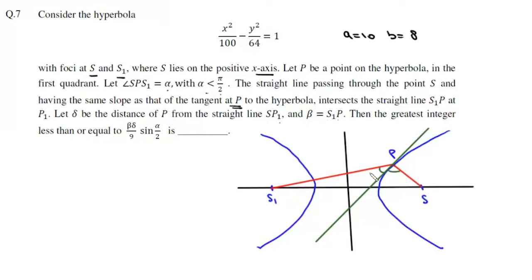Now it says angle sp s1 equals alpha, so this angle is alpha by 2 and this angle is also alpha by 2. So both these angles are alpha by 2.